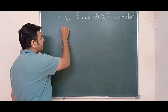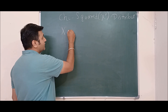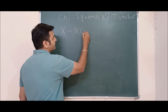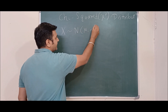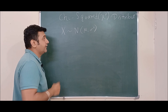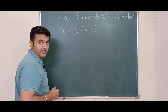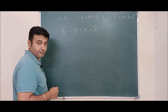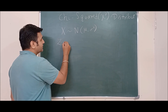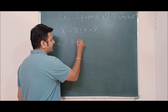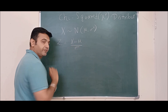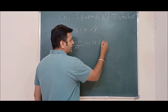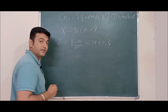Suppose you have a random variable X which follows a normal distribution with mean mu and variance sigma squared. We can always convert this into a standard normal random variable using the transformation Z equals X minus mu divided by sigma. We know that Z is a normal random variable with mean 0 and variance 1.